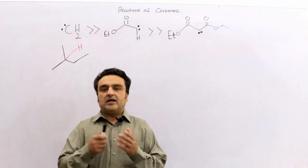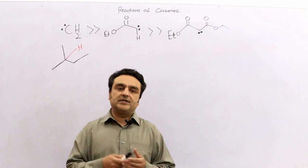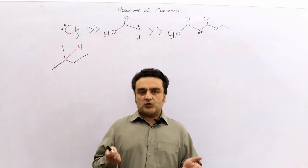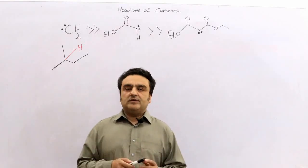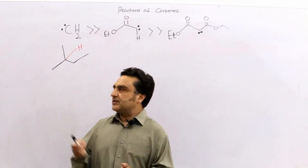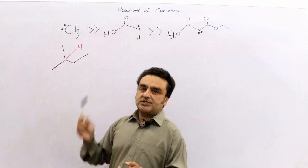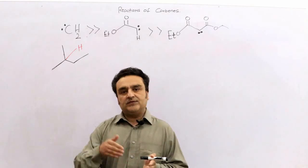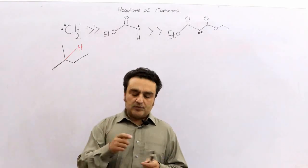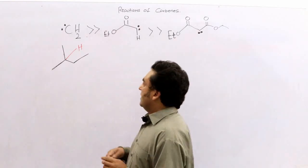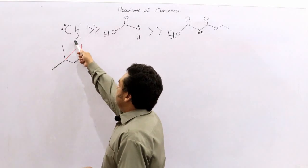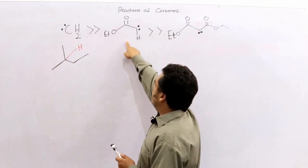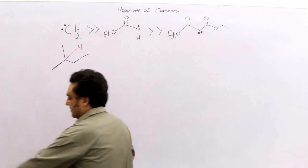Assalamu alaikum. I welcome all of you to the class on reactive intermediates. As we were discussing the reactions of carbenes, today we will be discussing the selectivity of these carbenes towards C-H bonds — which one is more reactive and more blind, and which one is less reactive or more selective. For that, I have drawn three carbenes: this is carbene one, this is another one, and this is the third one.